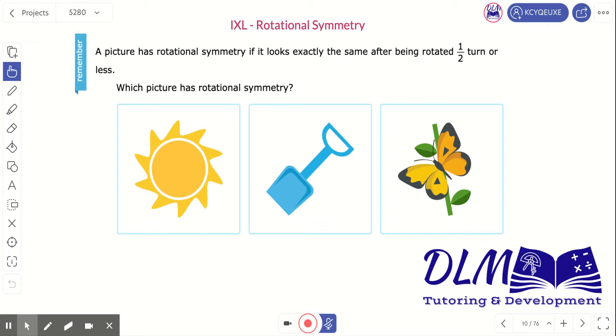Which picture has rotational symmetry? Or in other words, which picture can I take and turn it one half turn or less and it look exactly the same that it looks right now? In this case, the only picture that meets that is going to be right here, the sun.